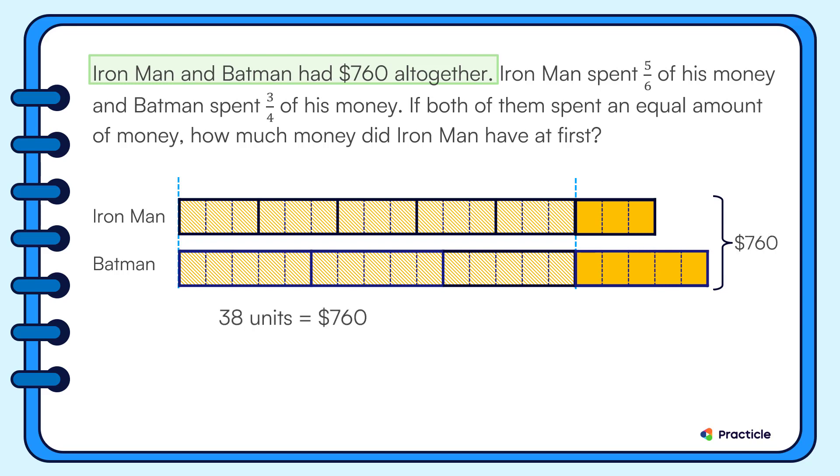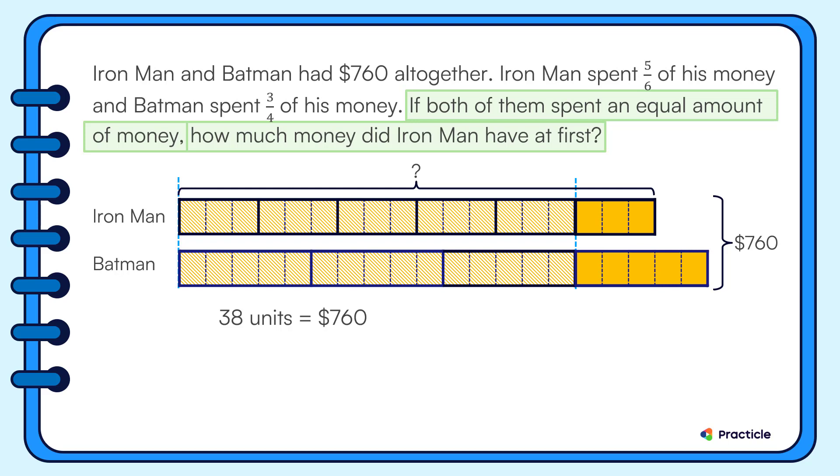Let's read the question and see what we're supposed to solve. How much money did Iron Man have at first? Which part of our model represents this? Yes, these eighteen smaller units right here.